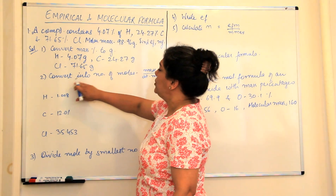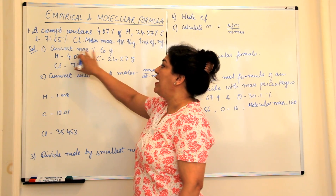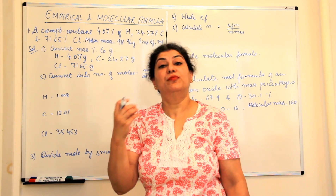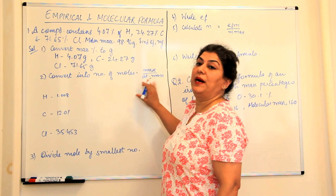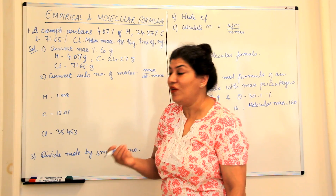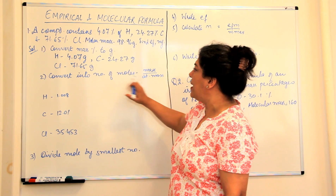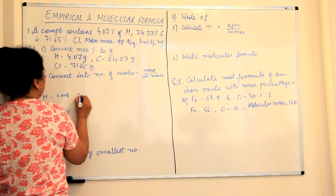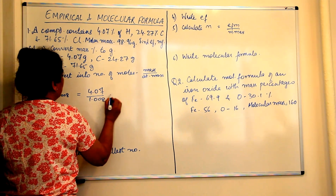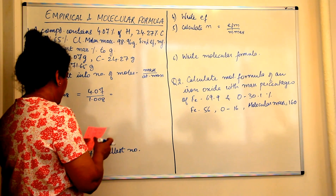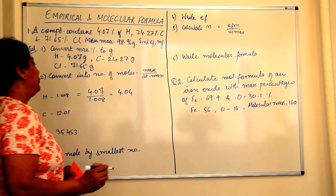The next step is to convert these values into moles. The grams of every element should be converted into the number of moles of that element. You take the mass of that element divided by the atomic mass of that element to get the number of moles. Hydrogen has an atomic mass of 1.008, so 4.07 divided by 1.008 gives you the number of moles of hydrogen, which is 4.04 moles.